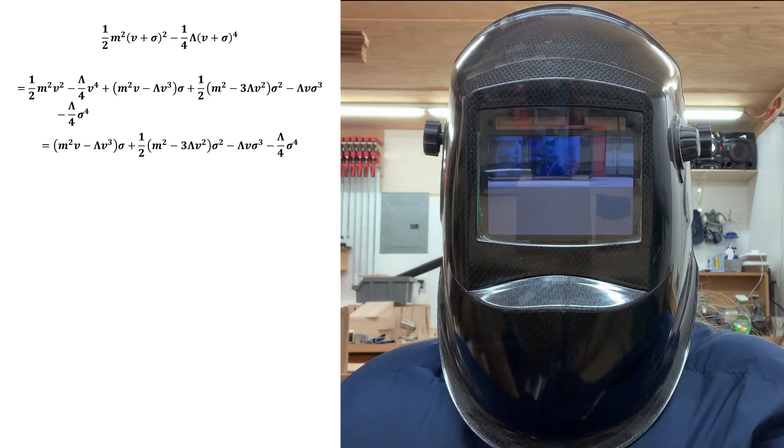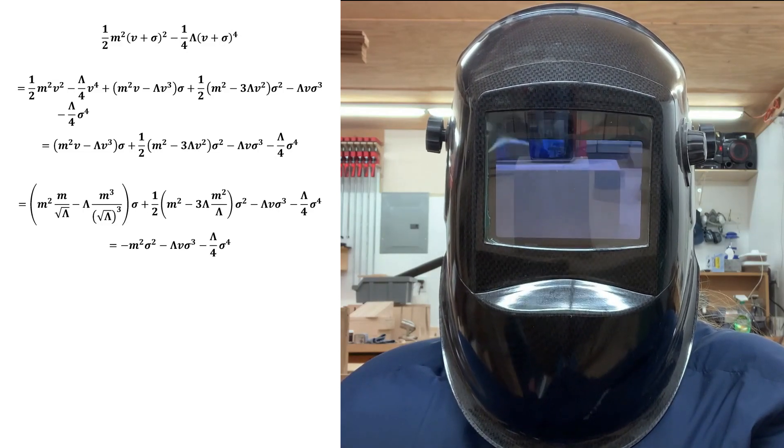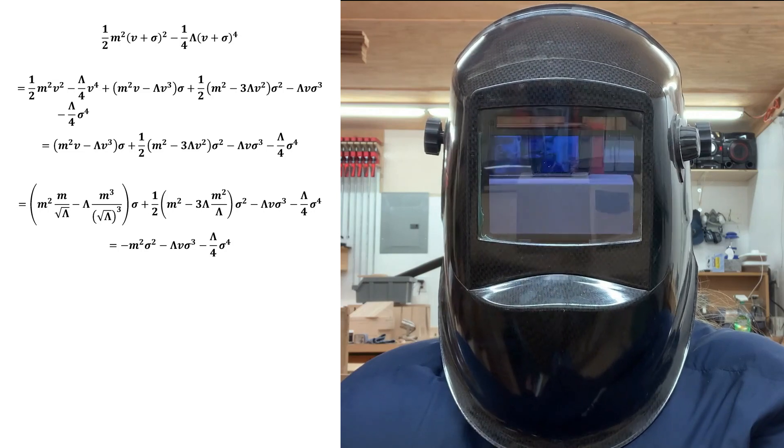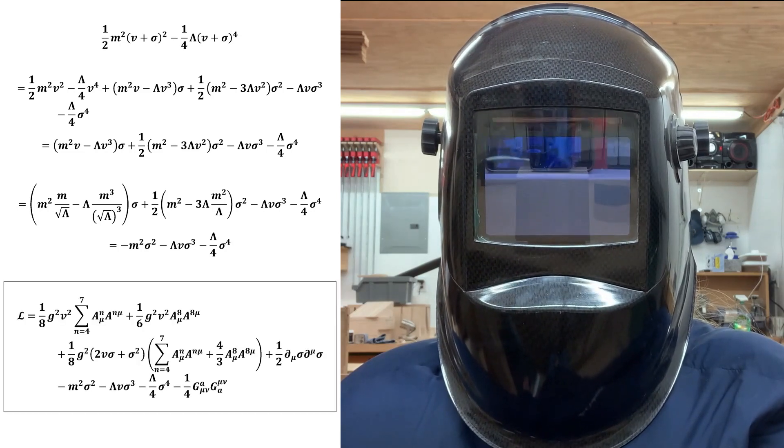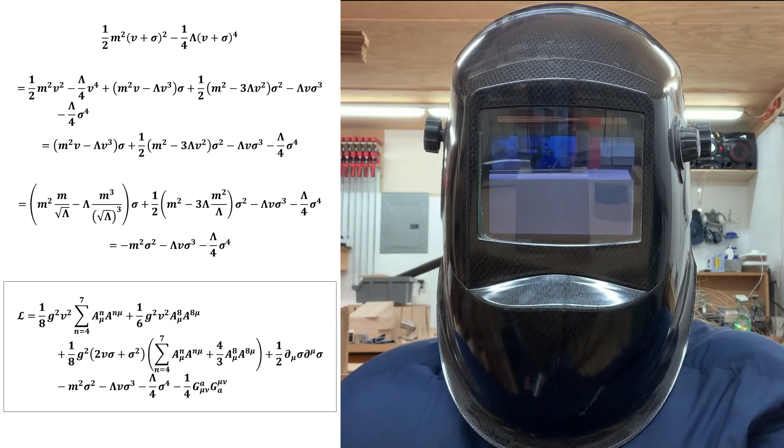We can then eliminate the linear term by inserting the value of v. Inserting this simplified potential term back in produces this final spontaneously broken Lagrangian density.